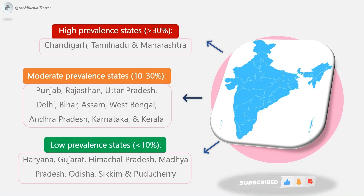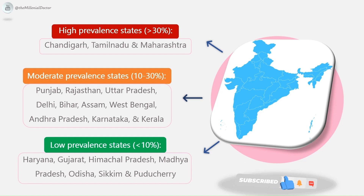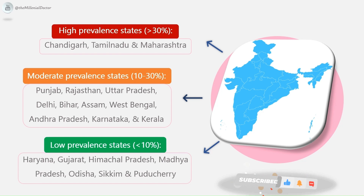The second is moderate prevalence states, accounting for 10–30% of infections: Punjab, Rajasthan, Uttar Pradesh, Delhi, Bihar, Assam, West Bengal, Andhra Pradesh, Karnataka, and Kerala.